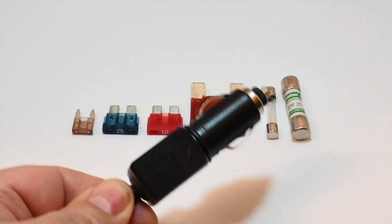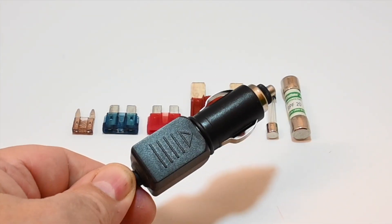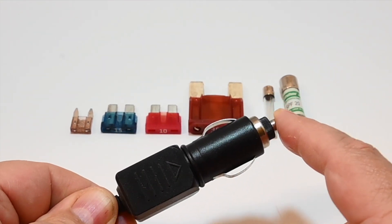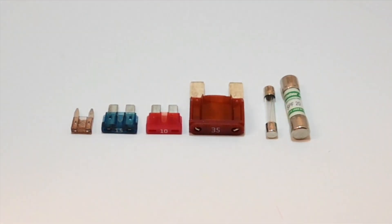For example here is an accessory outlet plug and if you unscrew the cap here you'll find an AGC fuse.